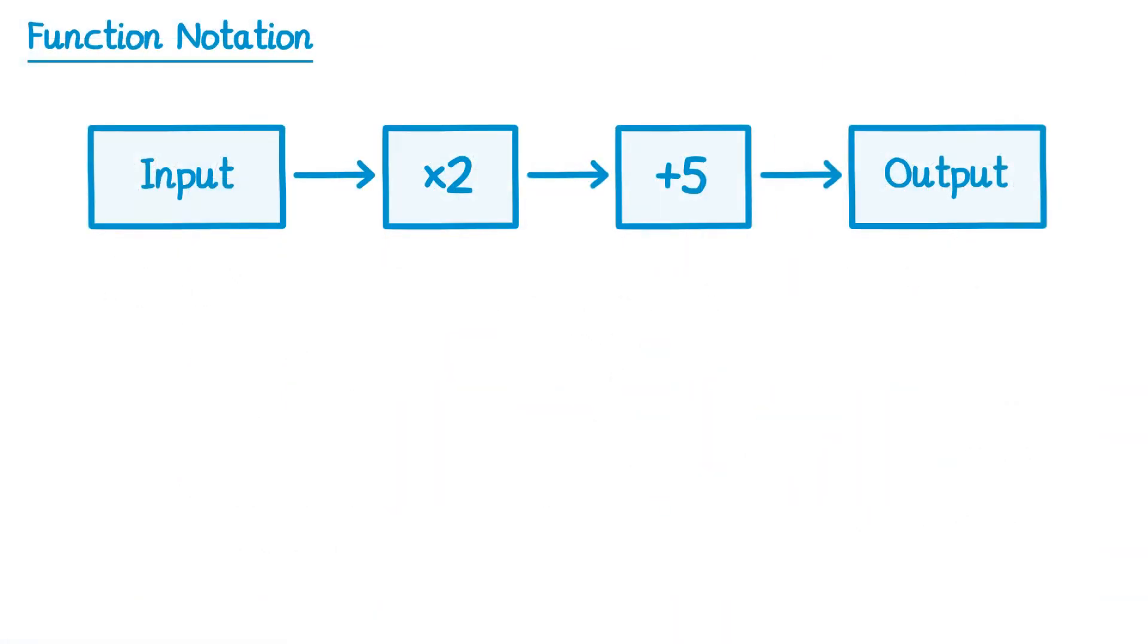In this video we're going to learn about function notation. Here we have a function machine where you take an input and it generates an output. For example, if our input was 7, we'd take 7, times it by 2 to get 14, add 5 to get 19 and that would be our output.